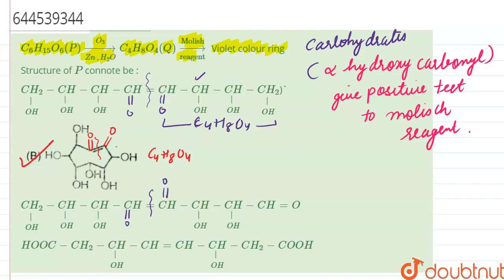This should not be our answer since we have been given that we get only one product, that is C4H8O4. But in this, we don't get one product; we get two different products.